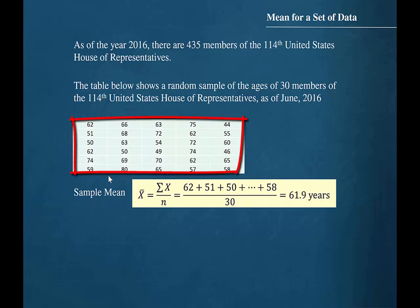The data values are all whole numbers, so we will again round to one decimal place and report the mean age for this sample of 30 members of the 114th House of Representatives as 61.9 years.